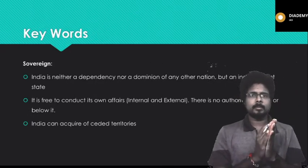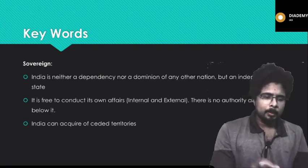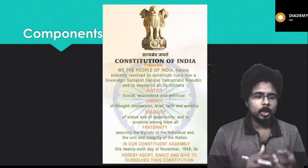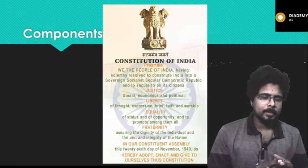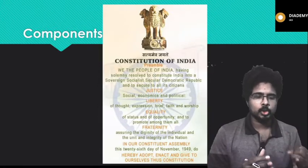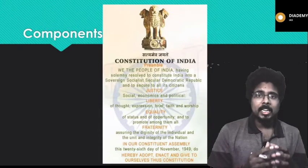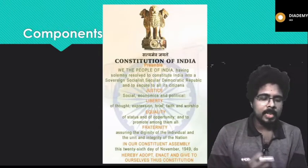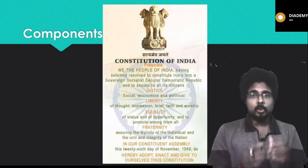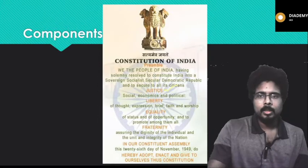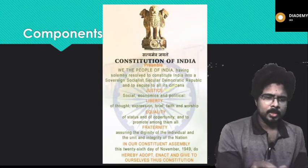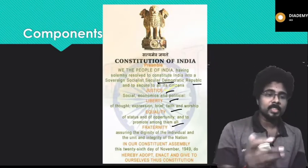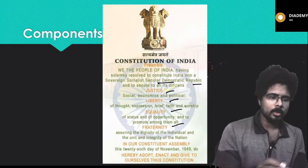Now let us look at the keywords in the preamble. The preamble text reads: 'We the people of India, having solemnly resolved to constitute India into a sovereign, socialist, secular, democratic republic and to secure all its citizens justice — social, economic, political — liberty of thought, expression, belief and faith, equality of status and opportunity, and to promote among them fraternity, assuring the dignity of individuals and unity and integrity of the nation.' The important keywords are: sovereign, socialist, secular, democratic, republic, justice, liberty, equality, and fraternity.